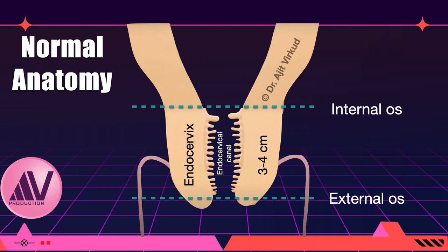Remember, carcinoma of cervix and carcinoma of endometrium are different cancers. Just because they are adjacent to one another and continuous with one another, it does not mean that they are the same organ.